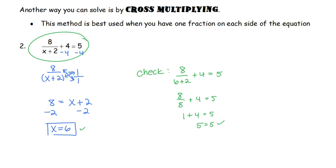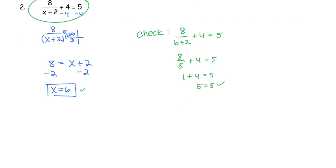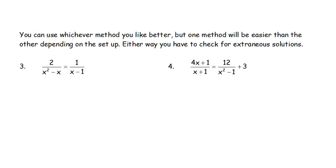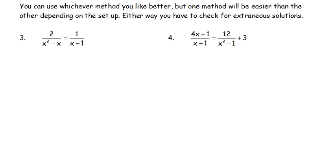Flipping to the back side: you can use whichever method you prefer, but one will be easier depending on the setup. Regardless of the method, you must check for extraneous solutions. For number 3, we've got one fraction on the left and one fraction on the right, so cross-multiplication is easiest given the setup.